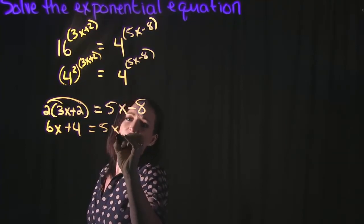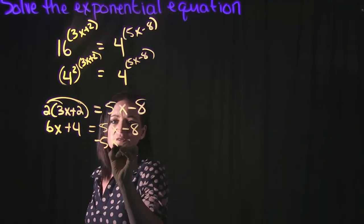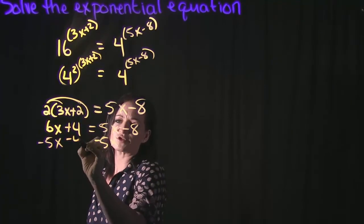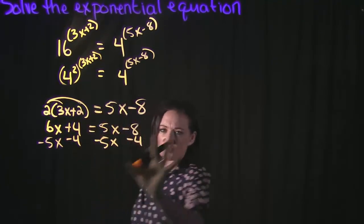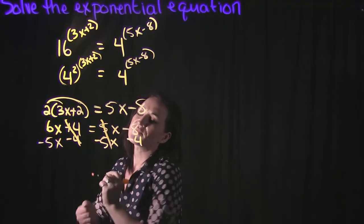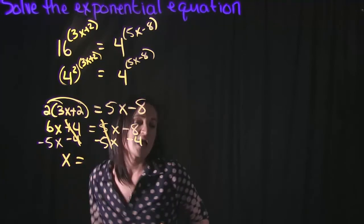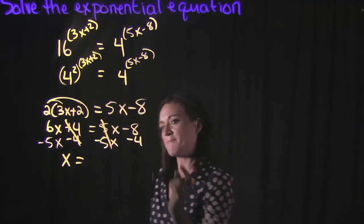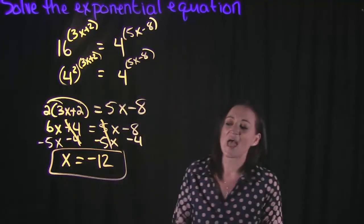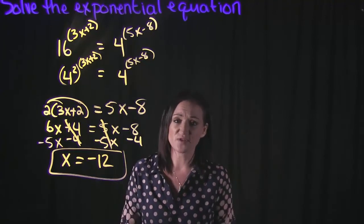I'm going to move my variables to the left and my numbers to the right. Subtracting 5x from both sides and subtracting 4: on the left-hand side 6x minus 5x is x, and on the right-hand side negative 8 minus 4 is negative 12. So we get that x equals negative 12.